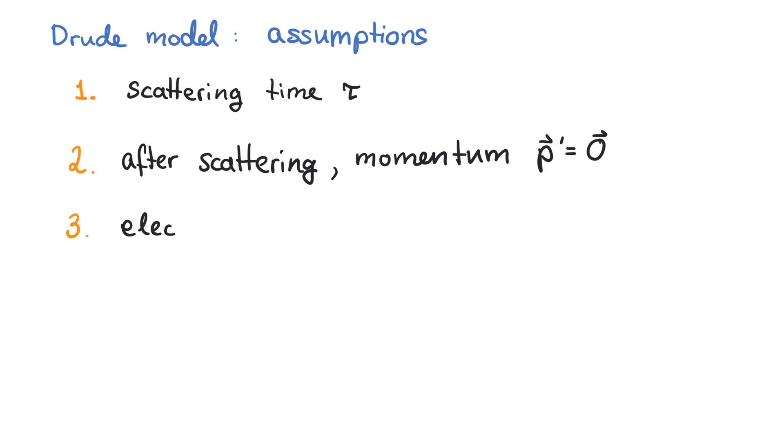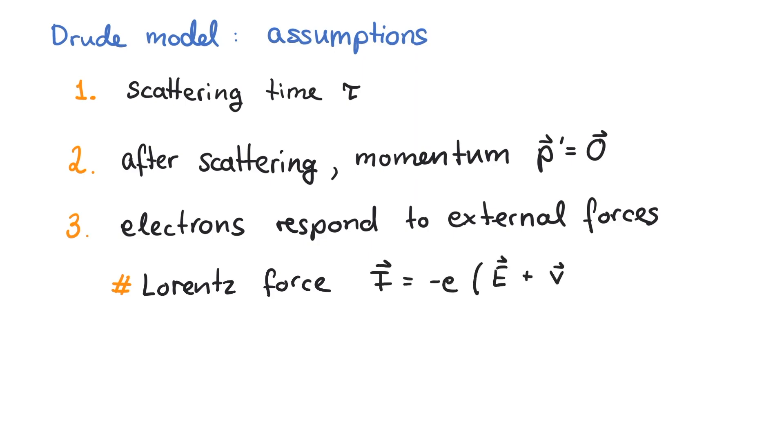And lastly, the third assumption is that the electrons respond to external forces in between scattering events. The force can be due to applied electric and magnetic fields that couple to the electron's charge, like in the Lorentz force.